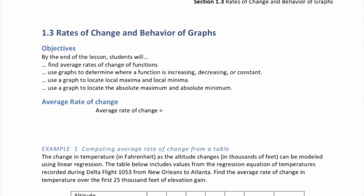Welcome to the video for section 1.3. Today we're going to be covering average rates of change of functions. We will be using graphs to determine whether a function is increasing, decreasing, or constant. We're going to use graphs to locate the maxima and minima, with local maxima and minima, and absolute max and absolute min.